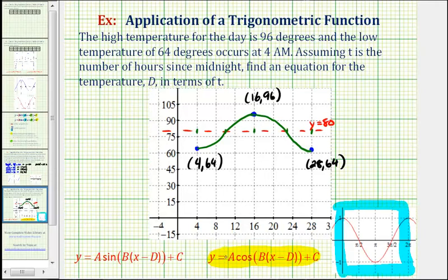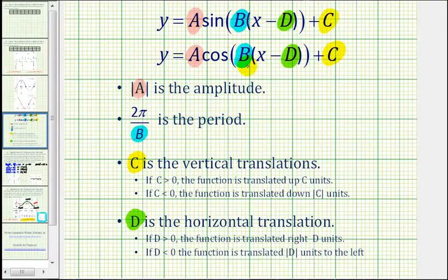So for a quick review, for both the sine and cosine functions, the absolute value of a is equal to the amplitude. Remember if a is negative, the graph is reflected across the x-axis. b affects the period where two pi divided by b is equal to the period. The value of d affects the phase shift. If we have x minus d, the graph has shifted right d units. If we have x plus d, the graph has shifted left d units. Then the value of c affects the shift up or down. If we have plus c, the graph has shifted up c units. If we have minus c, the graph has shifted down c units.